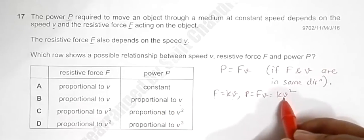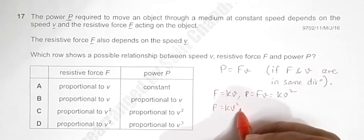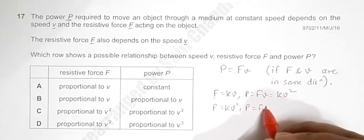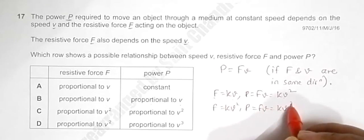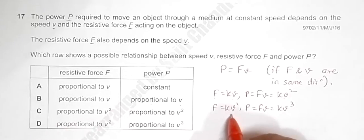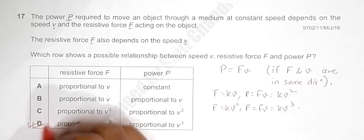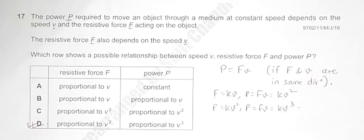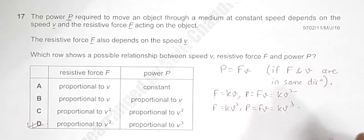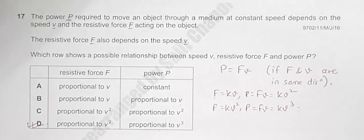Here, F is proportional to V squared, so power equals KV cubed, meaning power is proportional to V cubed. In choice D, force is proportional to V squared and power is proportional to V cubed — so choice D is correct. Whatever power V has in the force expression, the power in P itself should be greater by one. That's why choice D is correct.